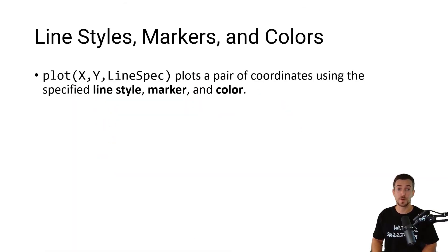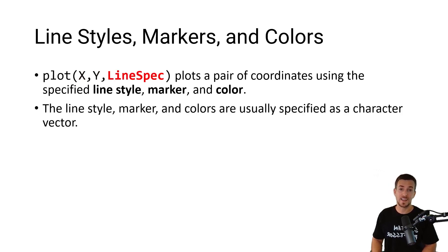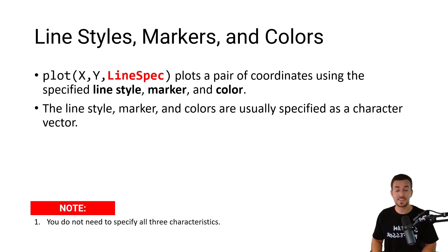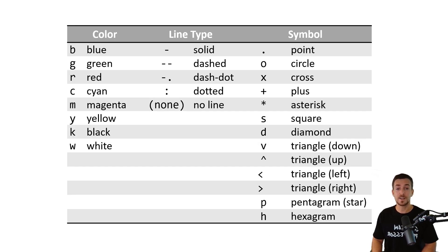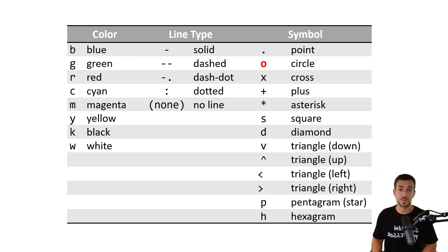Here we can see the syntax of the plot function. We've already provided a pair of coordinates and we want to specify the line style, color, and marker as a character vector. Two quick notes: first, you do not need to specify all three characteristics; and second, you do not have to provide formatting specifications for each pair of coordinates. Here we can see a table of some of the characters you can use. As an example, if we wanted to specify a red dashed line with circular markers, we would input 'R' for red, two dashes for a dashed line, and 'O' for circular markers.